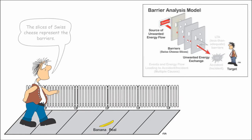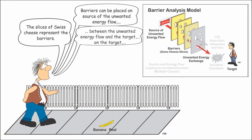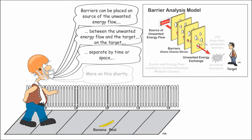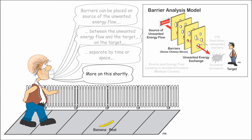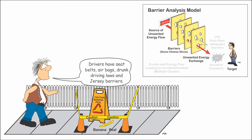Third, there are less-than-adequate barriers. They can be placed on the unwanted energy source, placed between the unwanted energy flow and the target, placed on the target, or separated by time or space. Warning signs, tape, and decals are examples of barriers. For drivers, jersey barriers, seatbelts, airbags, and crash zones are designed to protect drivers and passengers.